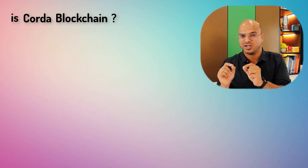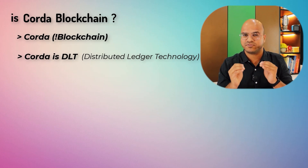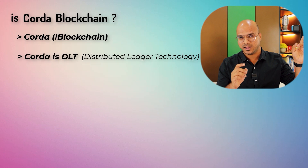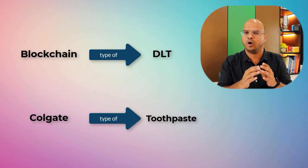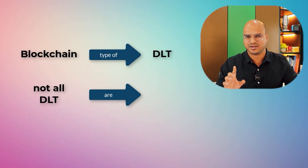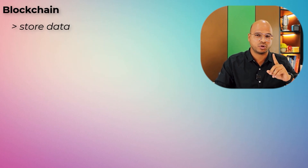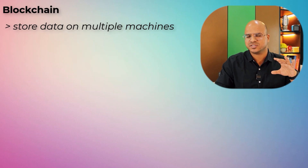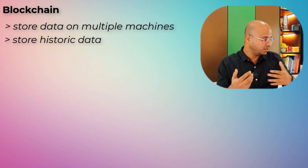Coming back to the question: is Corda a blockchain? In the previous video we talked about this — Corda is not a blockchain. To be specific, Corda is a DLT. If you want to understand the difference between DLT and a blockchain, there's a video linked in the i-button. But to summarize: blockchain is a type of DLT, just like Colgate is a type of toothpaste — you can say Colgate is a toothpaste but not all toothpaste is Colgate. The same way, blockchain is a type of DLT but not all DLT is a blockchain. In a blockchain you store data not on one machine but on multiple machines, which are nodes, and you store historical data.